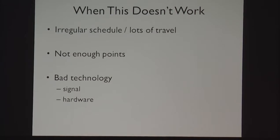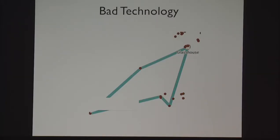But it's also hard if you don't have enough points, and also if you have bad technology. Sometimes the signals are really bad, so you're not actually at a location that it says you are. This could depend on the cell signal or even the hardware you have. An example of bad technology: this is a picture of where I was at a certain time in Williamsburg, and there's actually a coast and water. So it says I was walking on water on the lower left-hand side, which is obviously wrong.